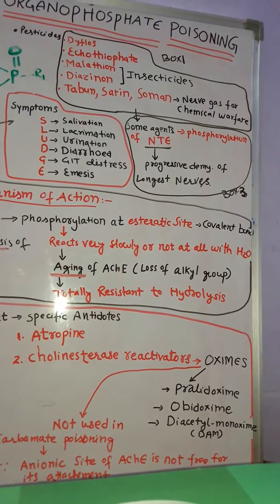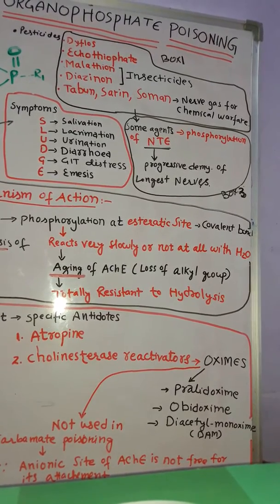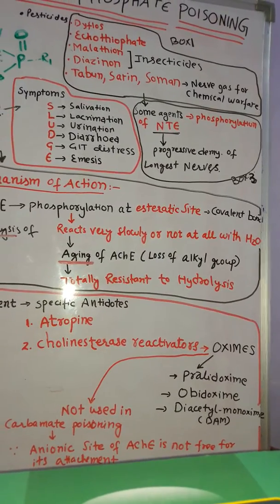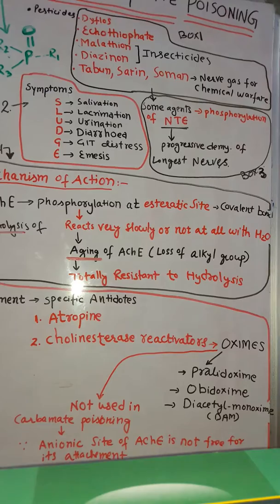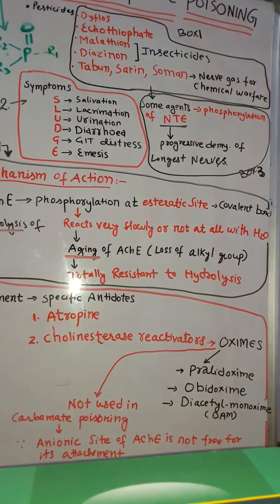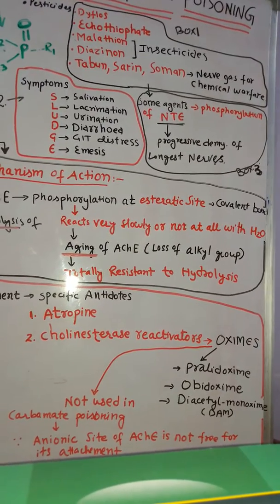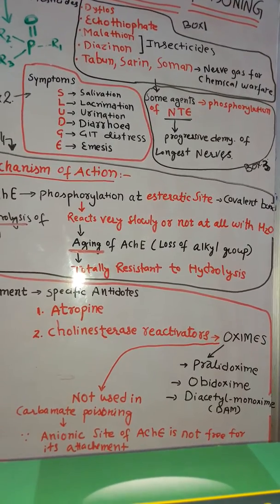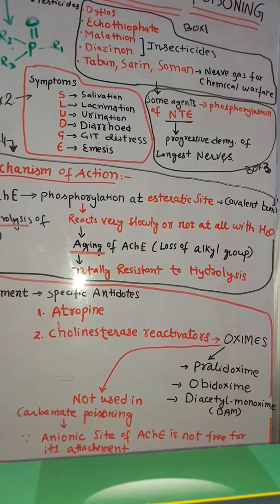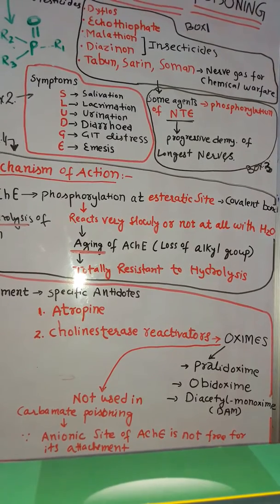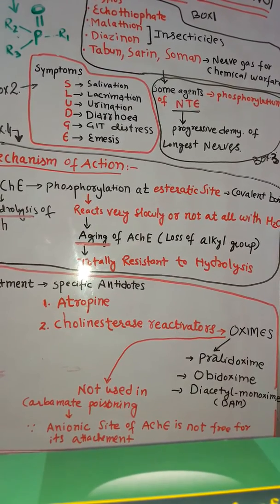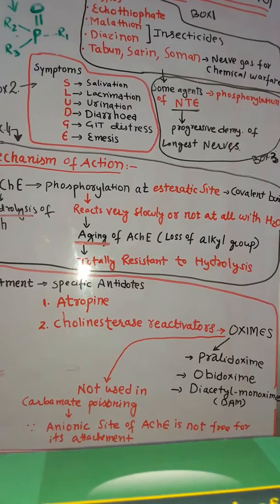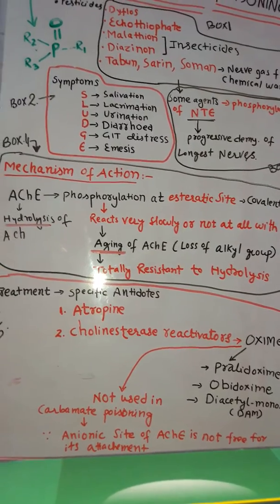The mechanism of the oximes: they react at the anionic site of the enzyme. In carbamate poisoning, however, these oximes are not used because the anionic site of acetylcholinesterase is not free for their attachment.